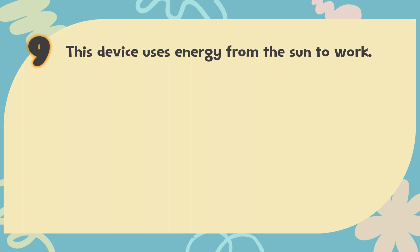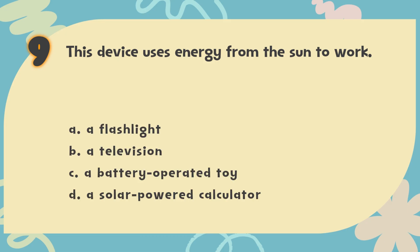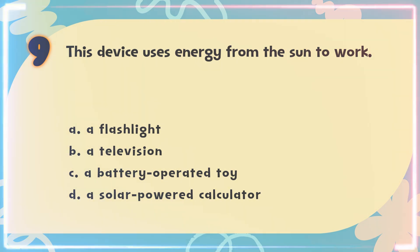Number 9: This device uses energy from the sun to work. The choices are: A. A flashlight, B. A television, C. A battery-operated toy, D. A solar-powered calculator.